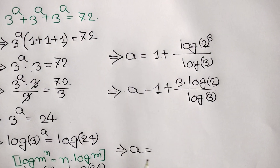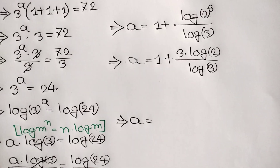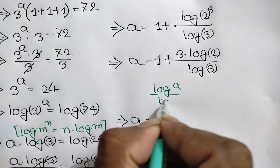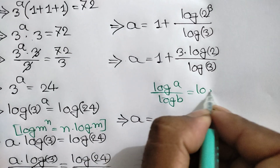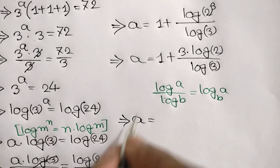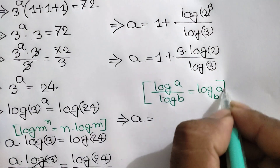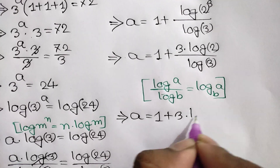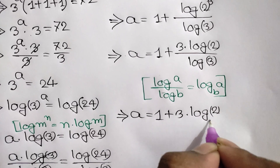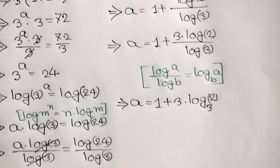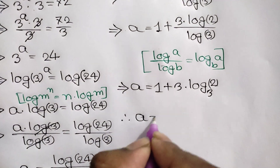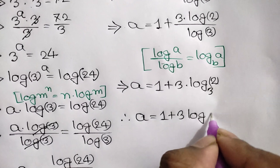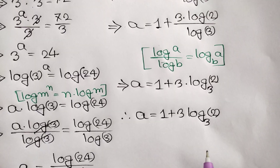We know another logarithm formula: log of a over log of b is equal to log base b of a. Applying this formula, we can write a is equal to 1 plus 3 times log base 3 of 2. So finally we get a is equal to 1 plus 3 times log base 3 of 2, and this is our final answer.